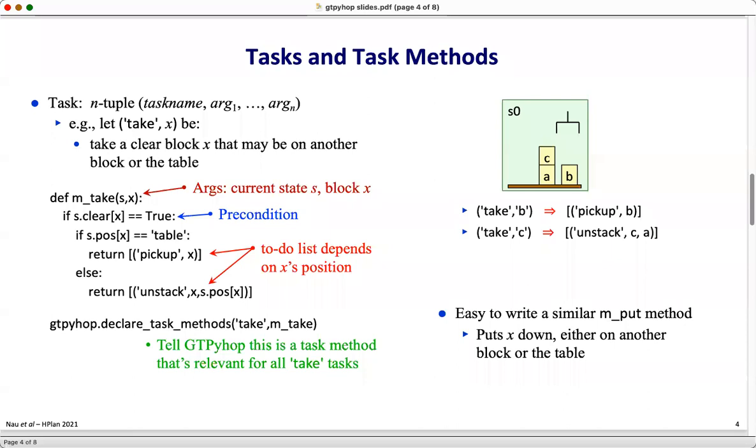A task is represented as an n-tuple including the task name and its arguments list. For example, suppose that take of x be the task of taking a clear block x that may be either on another block or the table. Here is a method for that task. The arguments consist of the current state and the block to be taken.